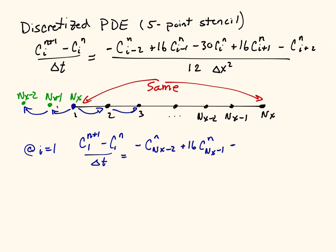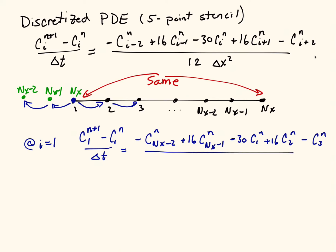We're going to have minus 30 times our location, the i-th location, which is c1^n, plus 16 times the point to our right, which is the second point, which is c2^n. And finally we have minus c3^n, which is the point 2 to our right. And this is all divided by 12 Δx². That's just that discretization.